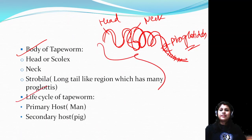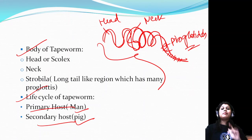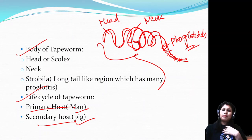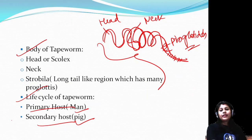Life cycle of tapeworm: the primary host is man - the tapeworm first completes its life cycle in humans. The secondary host is pig. So remember: in the life cycle of tapeworm, primary host is man and secondary host is pig.